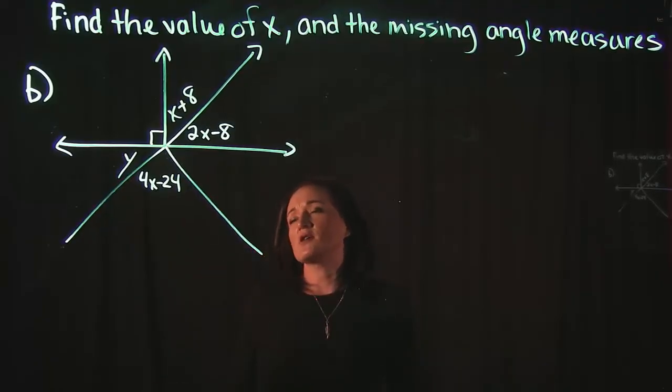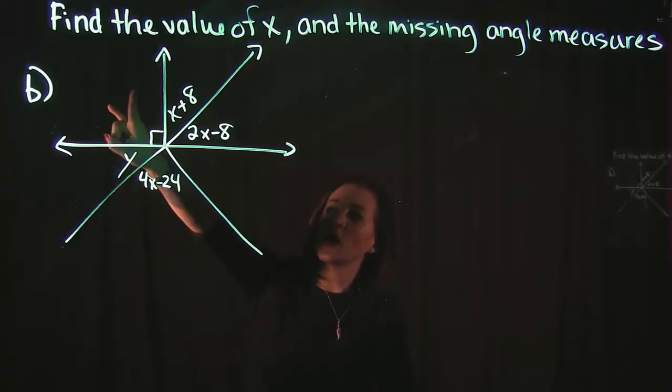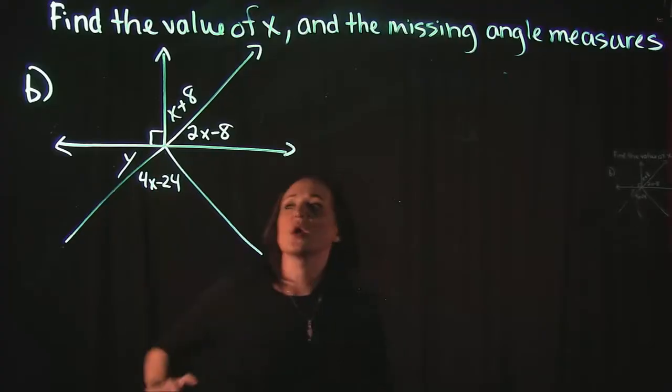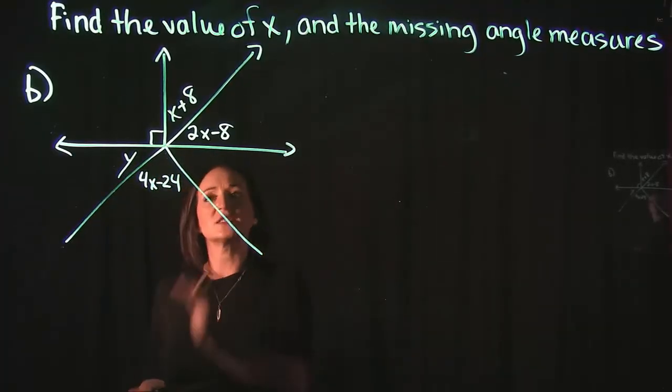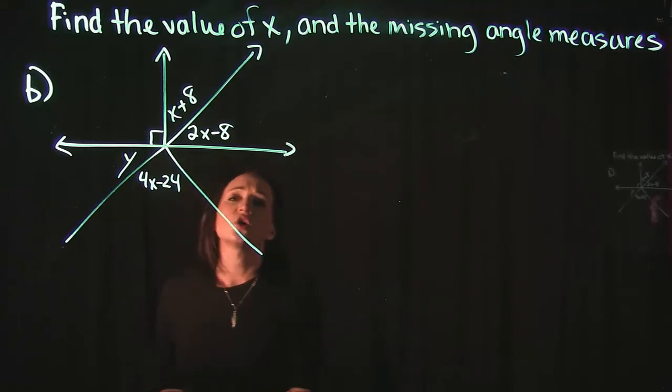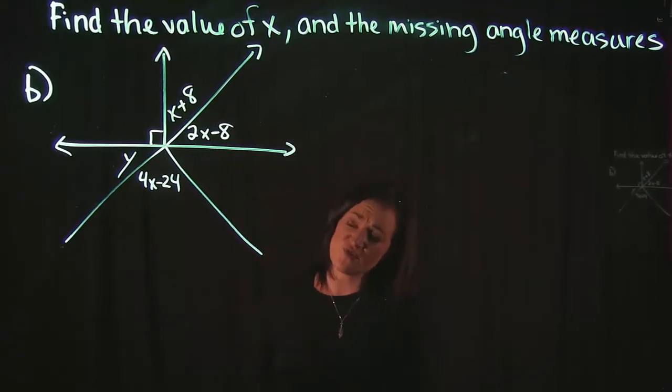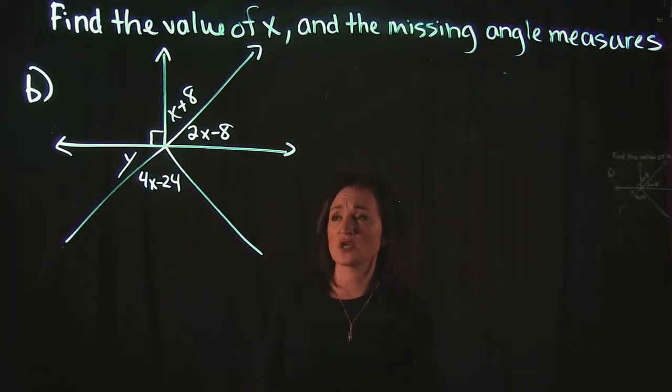So a couple of different things to note before getting started here. This top left angle here is marked by a 90-degree angle. We do have this straight line that goes completely across, so we do know that this is a straight angle. So we can use those facts to try and backtrack here and figure out what the rest of the angles are.